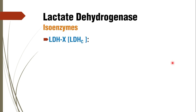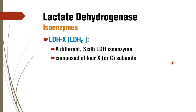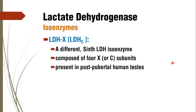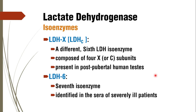There are atypical isoenzymes of lactate dehydrogenase. LDHX or LDHC is a sixth isoenzyme composed of four X or C subunits, present only in post-pubertal human testis. LDH6 is a seventh isoenzyme identified in the sera of severely ill patients — it is not a true isoenzyme but an isoform, formed when immunoglobulins couple with the protein component of lactate dehydrogenase.